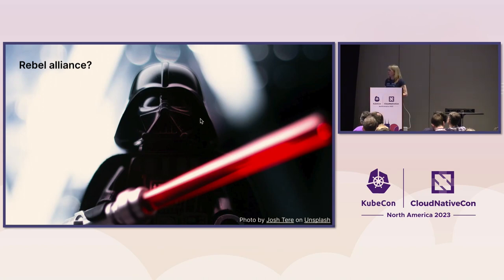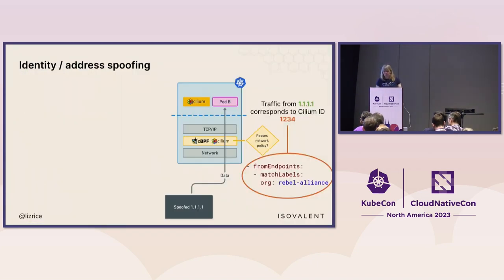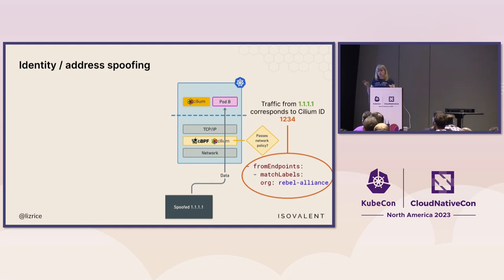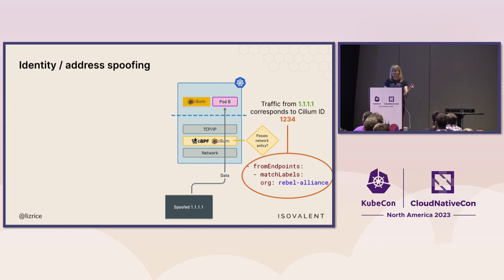But what if Darth Vader can use some kind of Jedi mind trick to spoof IP addresses? If Darth Vader can pretend to have the same IP address as C-3PO, and that IP address has a certain security identity, then he's going to pass the network policy — and that would be a bad thing. In fact, what can be potentially even worse: if you don't have transparent encryption turned on, traffic is flowing in the clear and will have the security identity embedded in the header. Somebody observing that traffic could see the security identity and match on it.